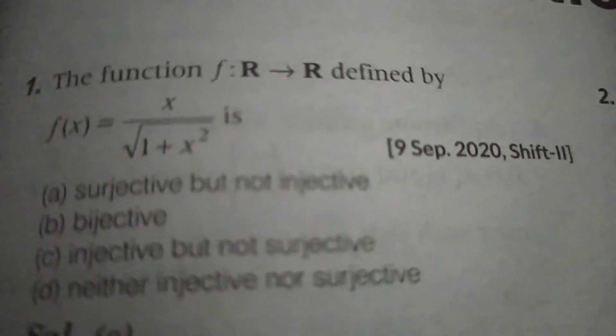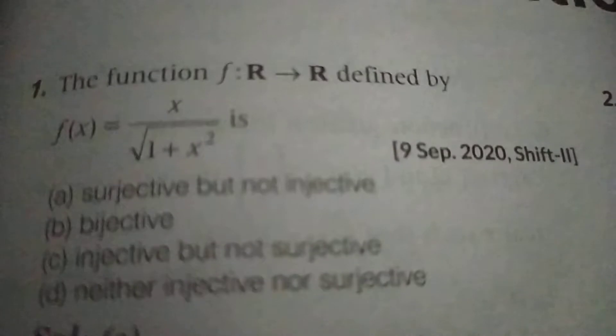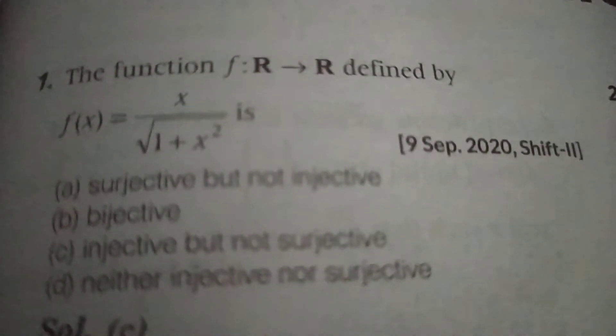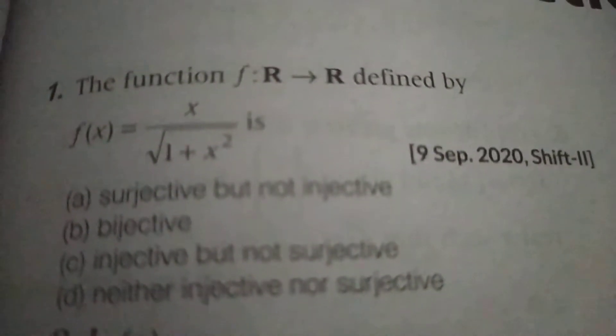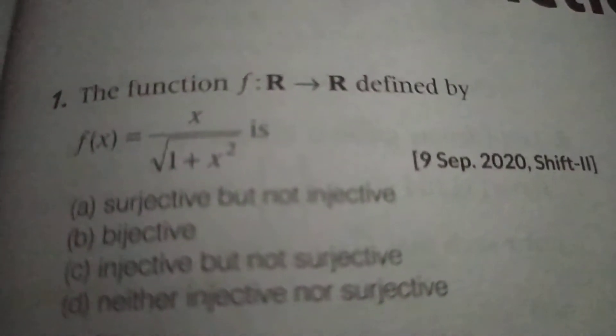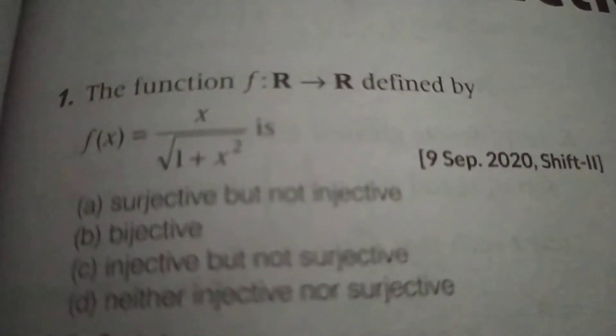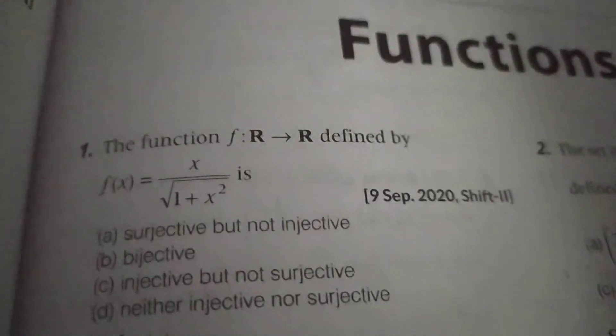See the first question. These are all previous years questions. The function f: R → R is defined by f(x) = x/√(1+x²). Check whether it is surjective, which means onto, or injective, which means one-one, or bijective, which means both one-one and onto.